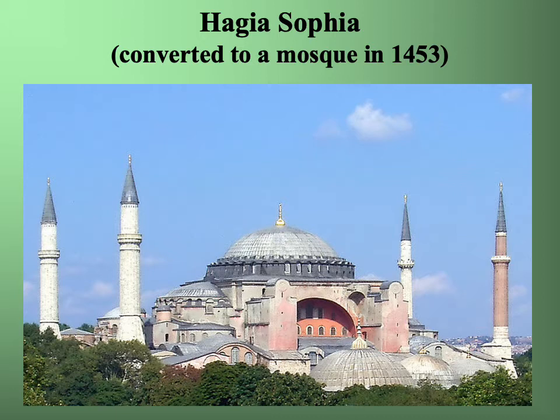For the most part it's the original church structure, but it should be pretty clear what they added to signify that it was now to be used for Muslim worship — and that would be the four minarets surrounding it. This structure is really quite huge; it may be hard to fully appreciate if you don't see the real thing. If you were standing in front of one of those windows, those windows would be about two and a half to three times your height.